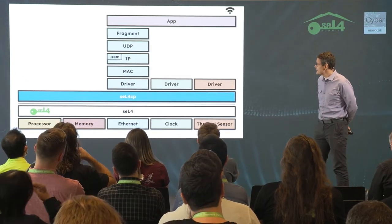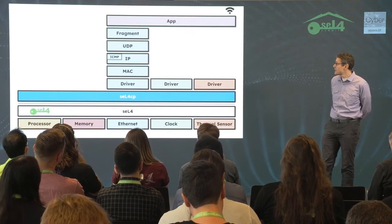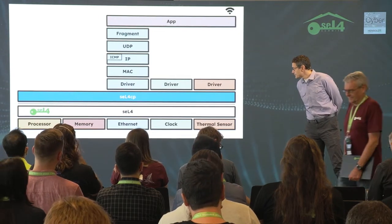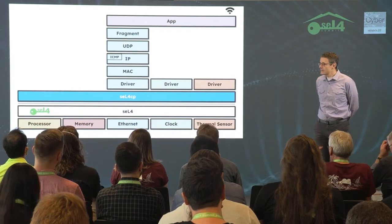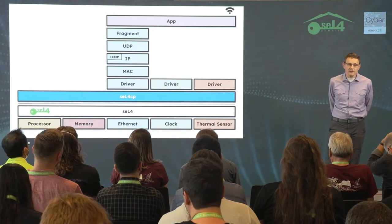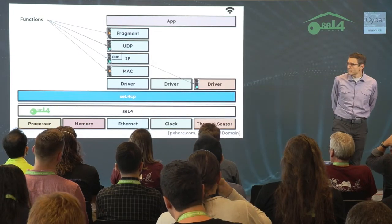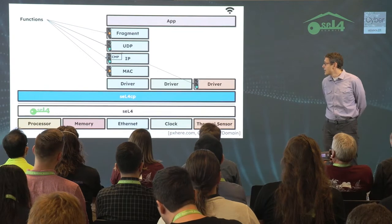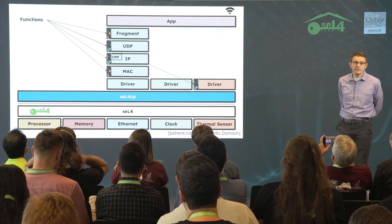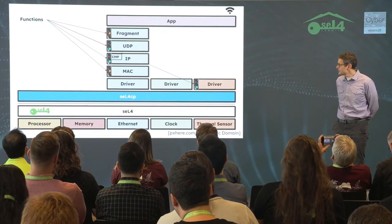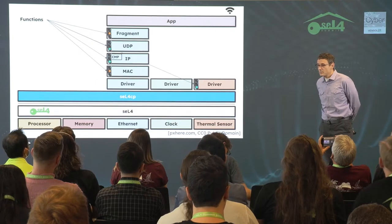Here's the current software architecture for our system. Besides seL4, I think the largest interesting component is the software stack. We're planning to use the seL4 core platform, which I think is ideally suited for this work. As for status: we have a full UDP and IP layer done, some parts of the fragmentation and reassembly layer done, and some parts of the MAC layer. All of this is implementing the IPv6 protocol — I have no plan to support IPv4.